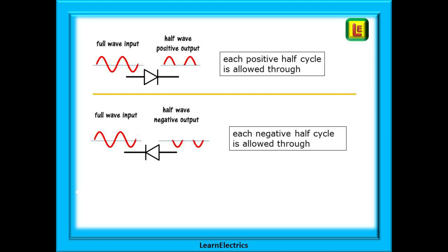If we supplied an alternating current to a diode then the top drawing shows that only the positive half cycles of voltage and current are allowed through. This is called half wave rectification. If we turn the diode around only the negative half cycles can get through.